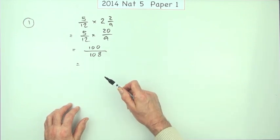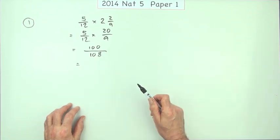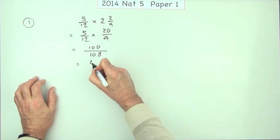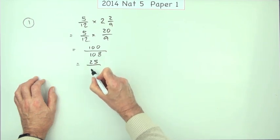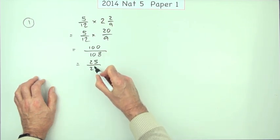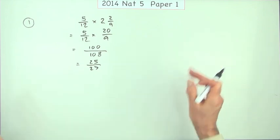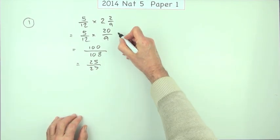But if you can't, you can always whittle it down—divide by 2, and then if it still goes, divide by 2 or divide by 3. Well, these numbers both divide by 4: 4 into 100 goes 25, and 4 into 108 goes 27. And then they don't cancel any further, so that's it done.